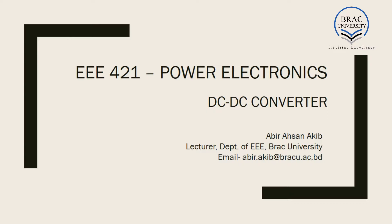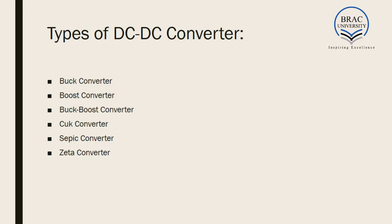Hello, in this lecture on power electronics, we are going to study DC-DC converters. This is the first stage of power electronics circuits. Before we start a detailed discussion on DC-DC converters, we have to learn what a DC-DC converter does. A DC-DC converter changes the voltage — it can make the output voltage smaller or larger than the input voltage, depending on which circuit we are using.